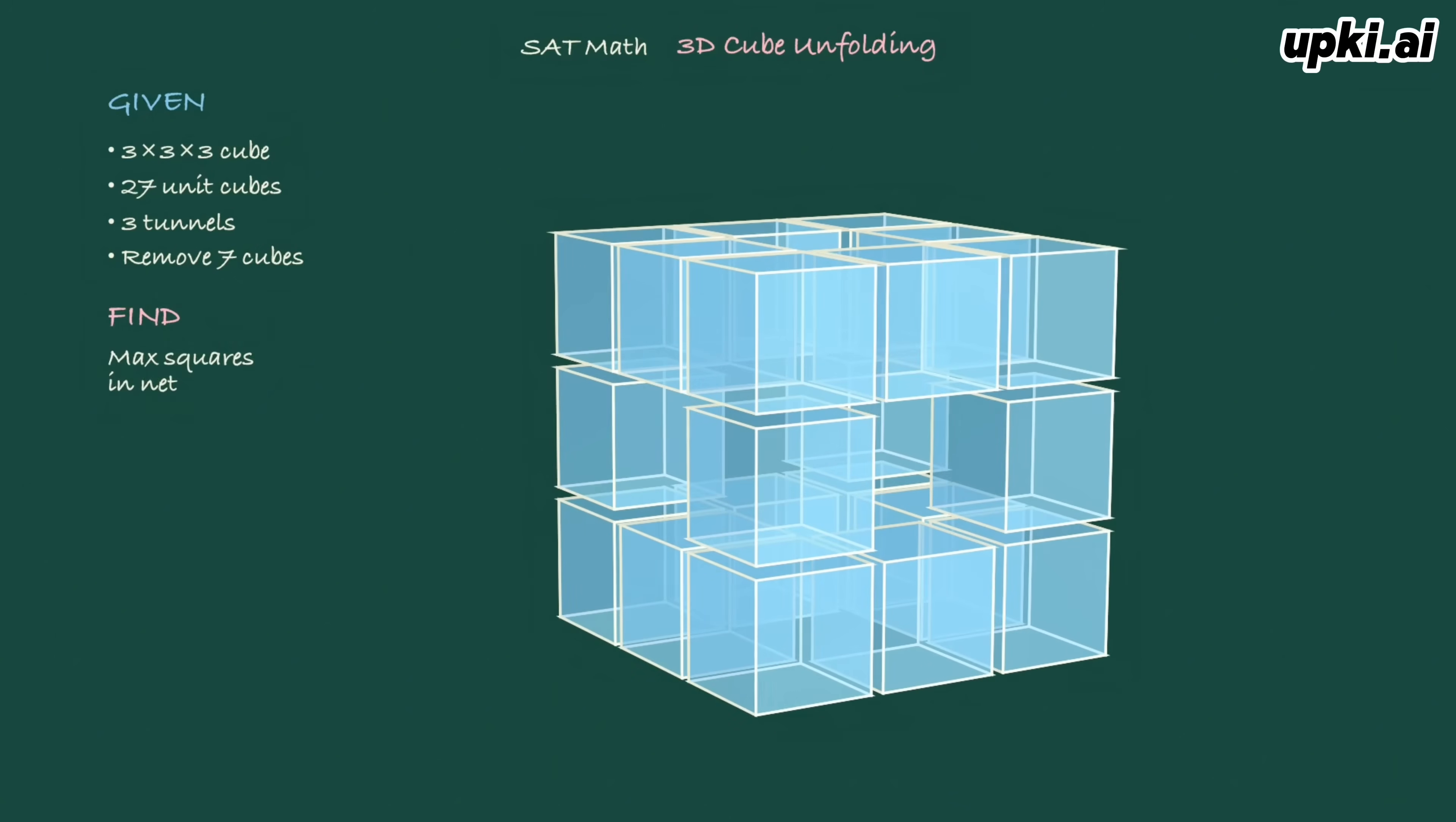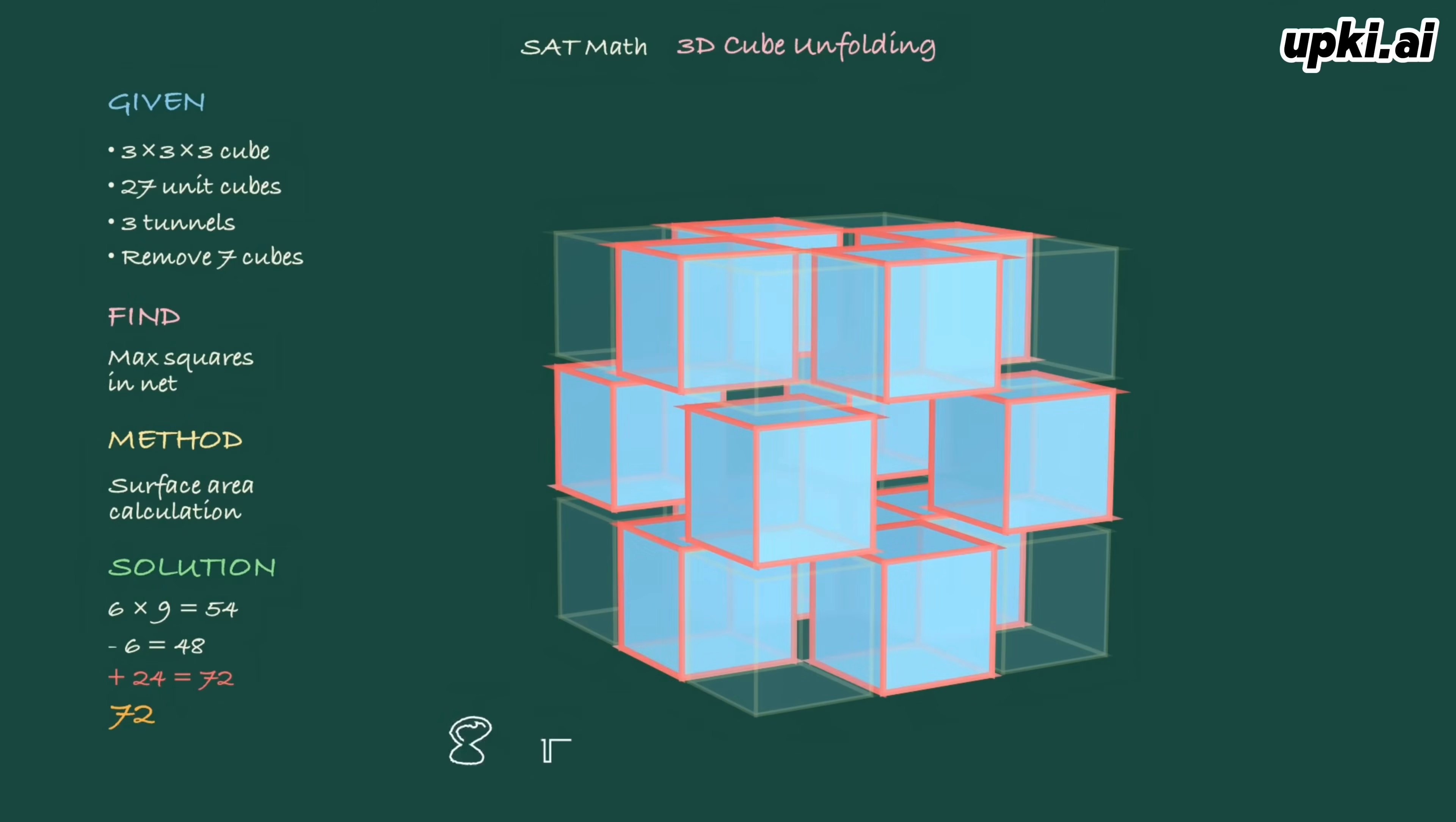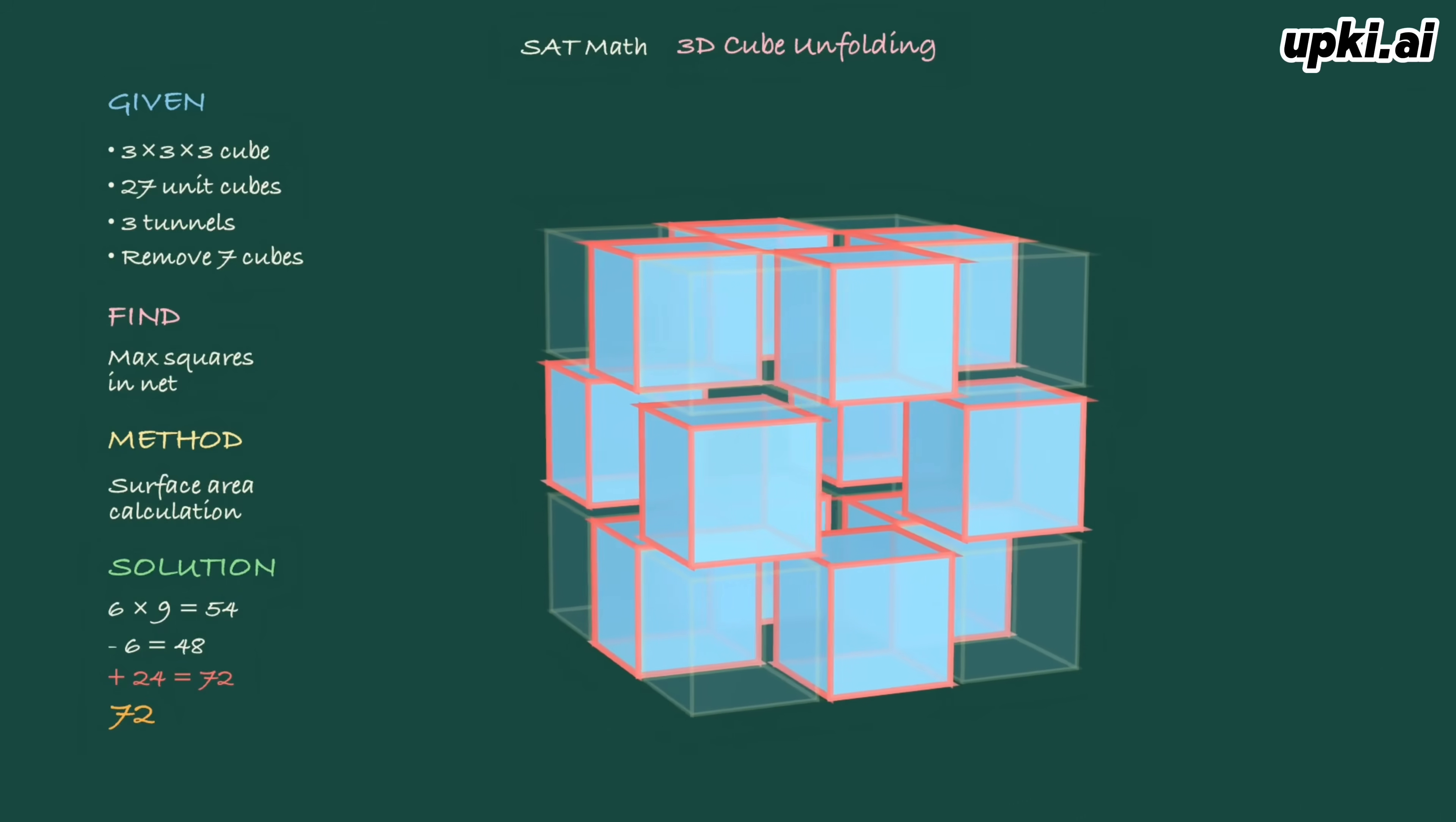We need to find the maximum unit squares in the unfolded net. We'll calculate the total surface area. The original cube has 6 faces, each with 9 squares. We removed 6 face centers, losing 6 squares. But the tunnels add new internal surfaces. Let's count them layer by layer. The answer is 72 unit squares.